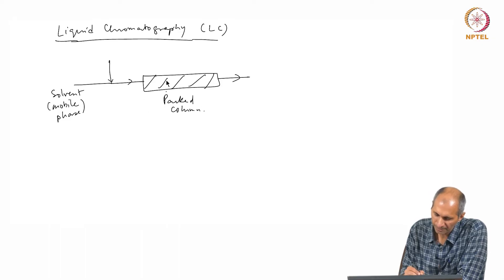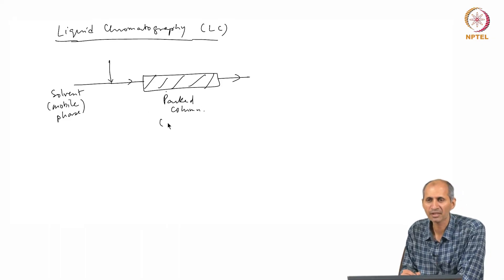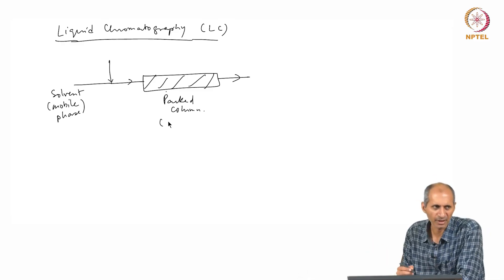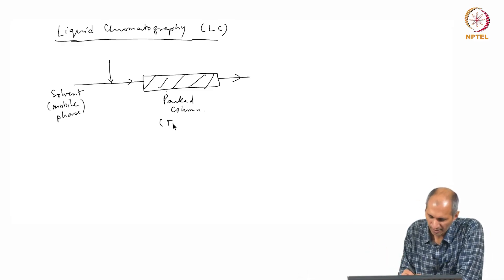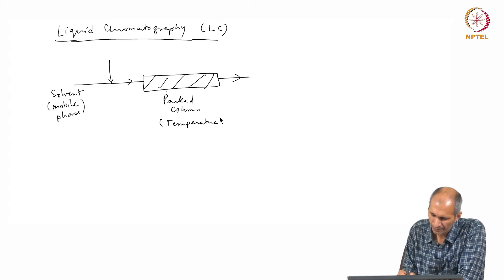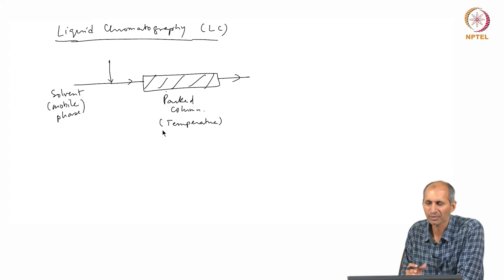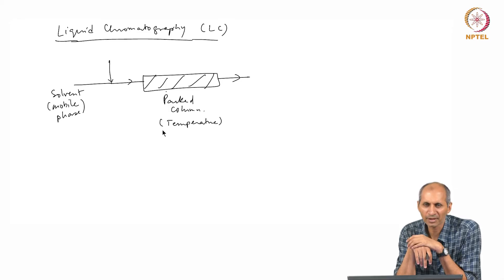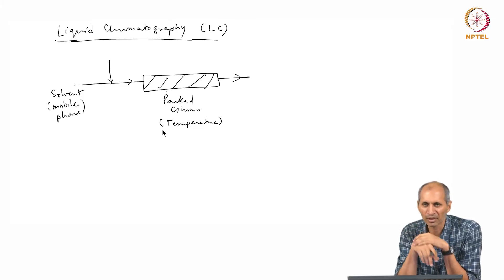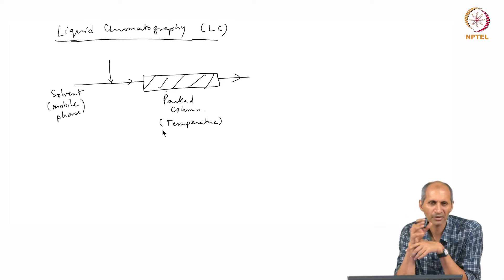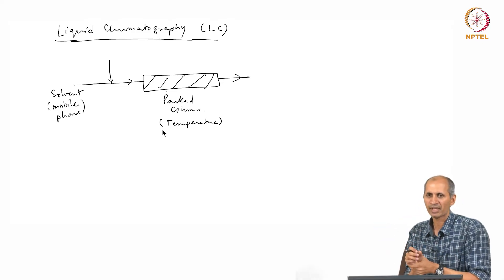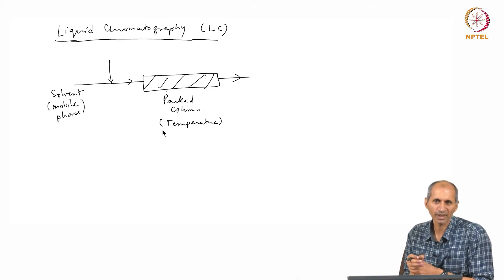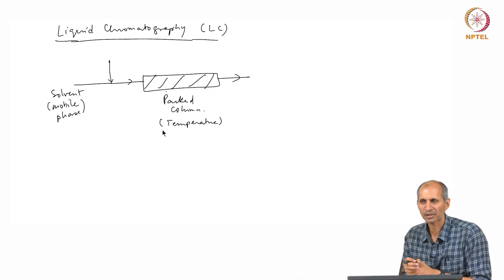You can change the temperature, but you cannot change it in the range of a GC. Temperature control is usually not done. The reason we do not do it is there is a liquid inside. If you increase temperature too much, it will start boiling and it will vaporize and that will create a bubble and that bubble stuck in the column is a problem. Flow will not occur properly.